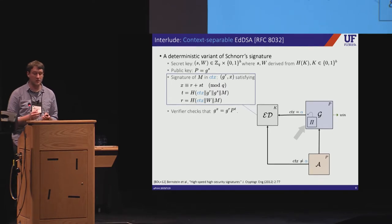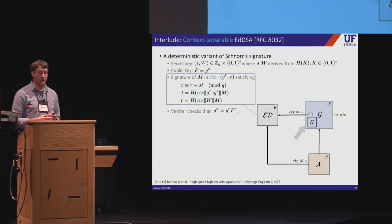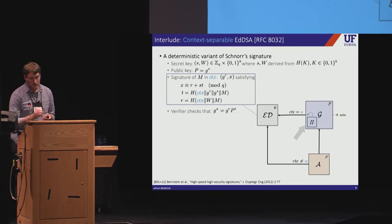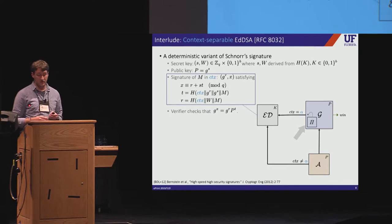So for example, suppose the application is some key exchange protocol that uses EDDSA for authentication. As long as the protocol signing and verifying operations always use the game context, context separation prevents the adversary from being able to trivially impersonate the server. So codifying context separation into our experiment allows us to prove security under exposed interface attack for large classes of applications. Let me now show you how.